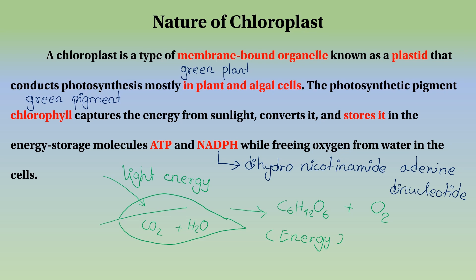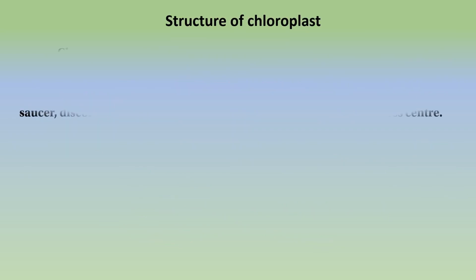NADH naturally occurs in our body. This is the chloroplast, where ADP and NADH function in the same way. Chloroplasts are stretched organelles.